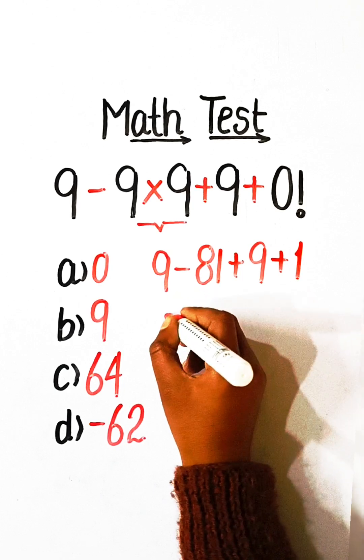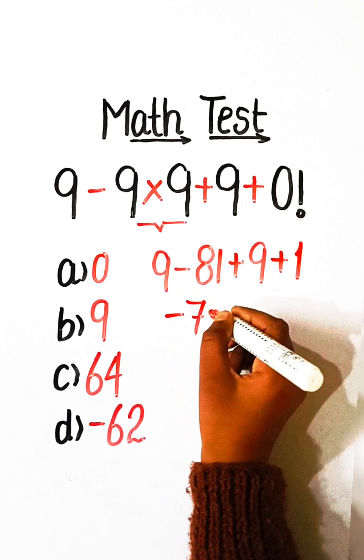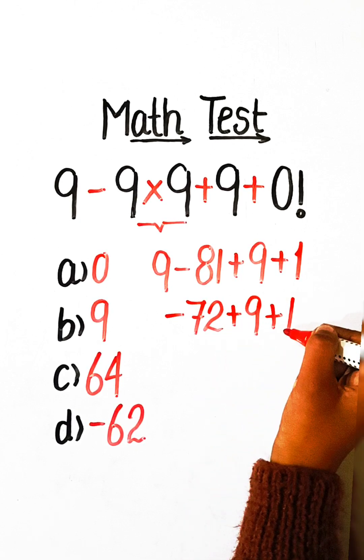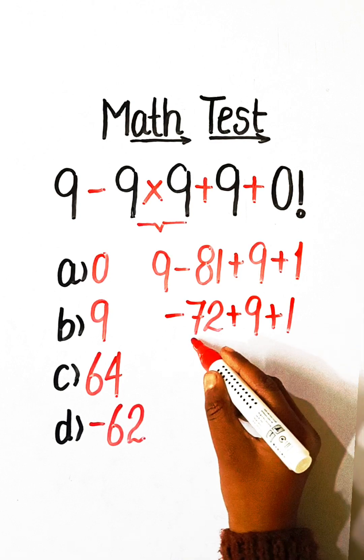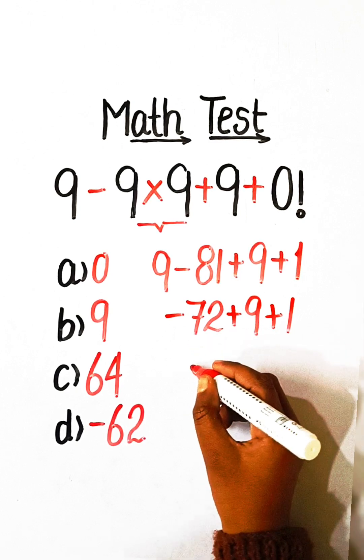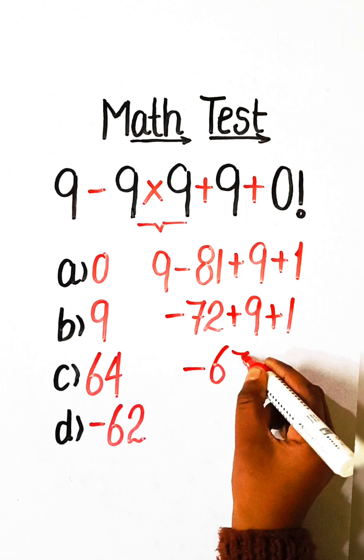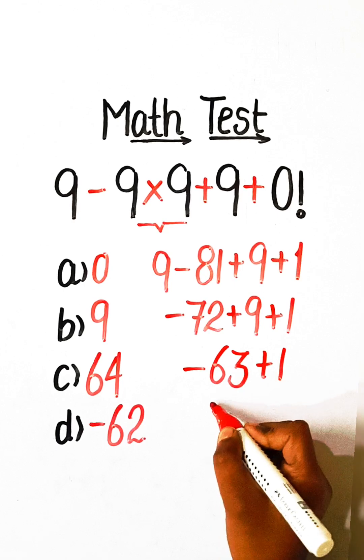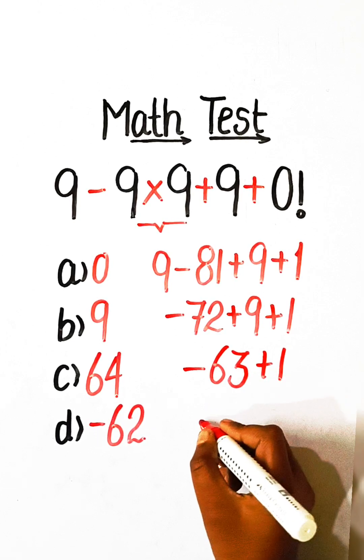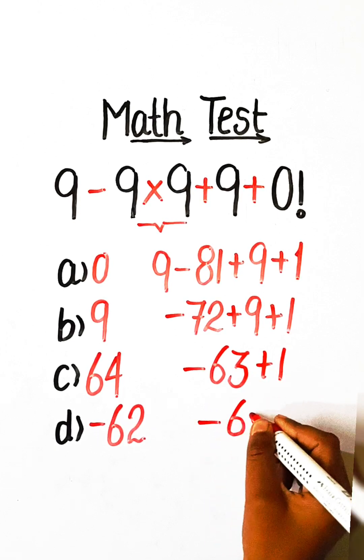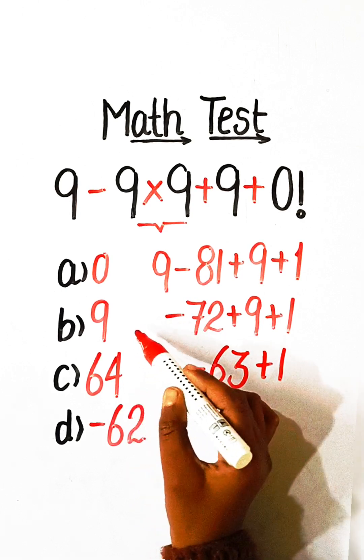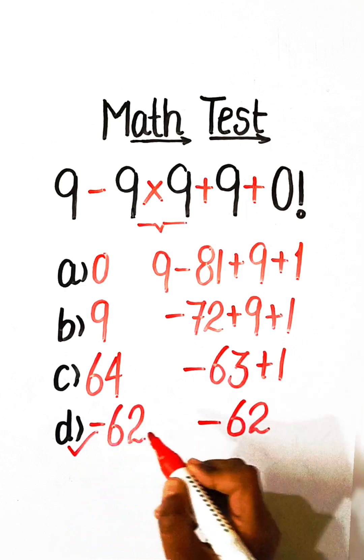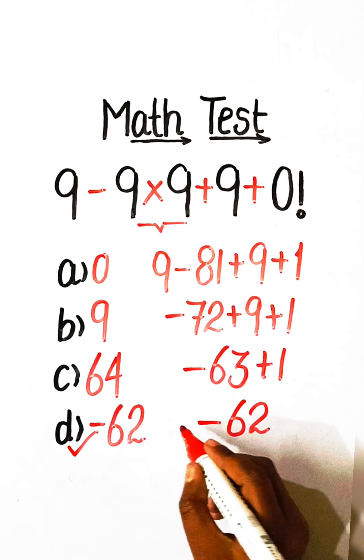So 9 minus 81 is minus 72 plus 9 plus 1. Minus 72 plus 9 is minus 63 plus 1, so minus 63 plus 1 equals minus 62. Here in the options we have in option d minus 62, so option d will be our correct answer.